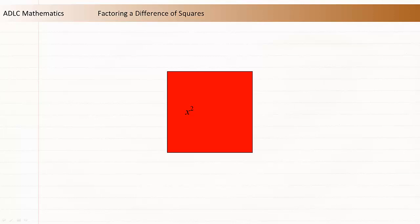Here's a square that has an area of x squared. This means it has a length and width of x. If we remove a square of length y, we'll remove an area of y squared. So the red area is now x squared minus y squared.